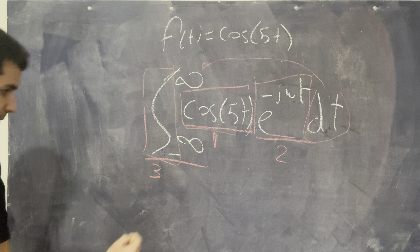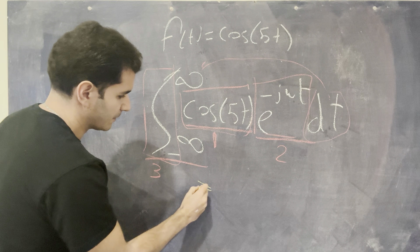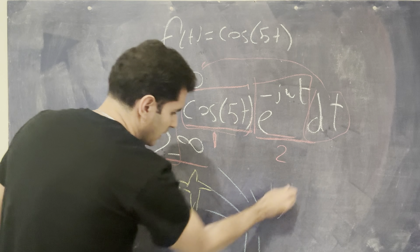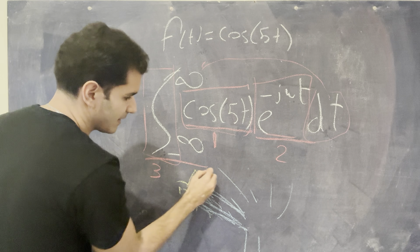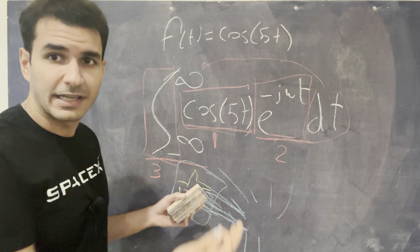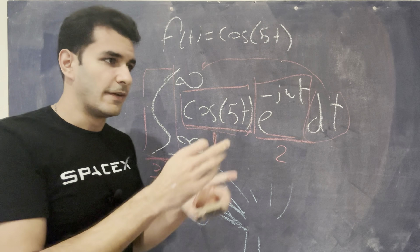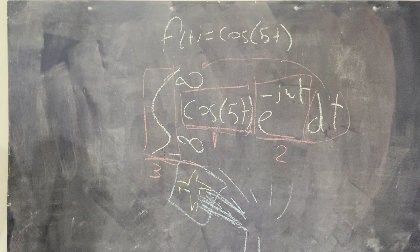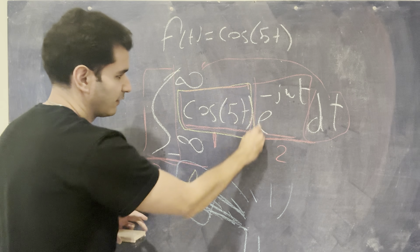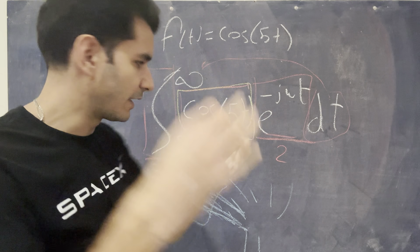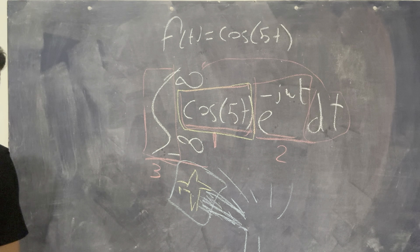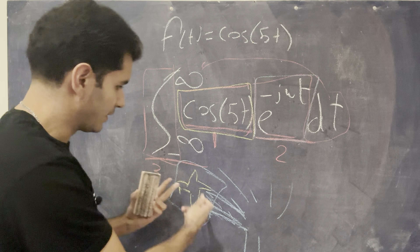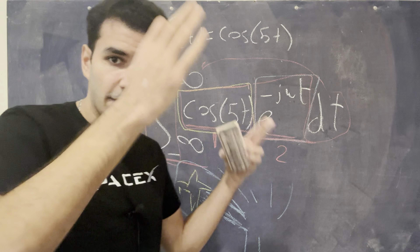Think of e to the minus j omega t as a radar — like a watch tower sending out signals to detect a plane flying overhead. The moment those signals collide with the plane, a detection is made. This is exactly how airports work with their rotating antennas. Similarly, think of the sinusoid as the plane flying in the air, and e to the minus j omega t as the radar sending out signals. When they collide at the same frequency, you detect the signal and plot it.